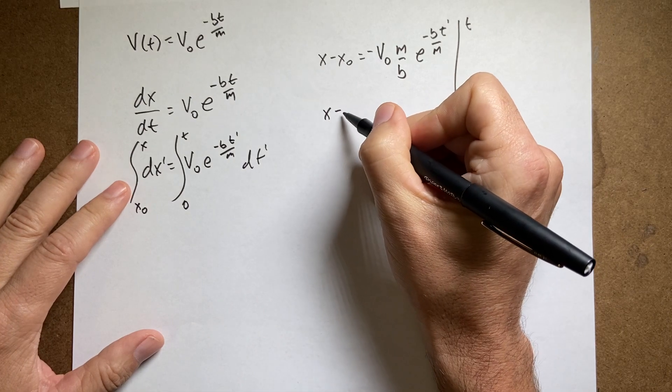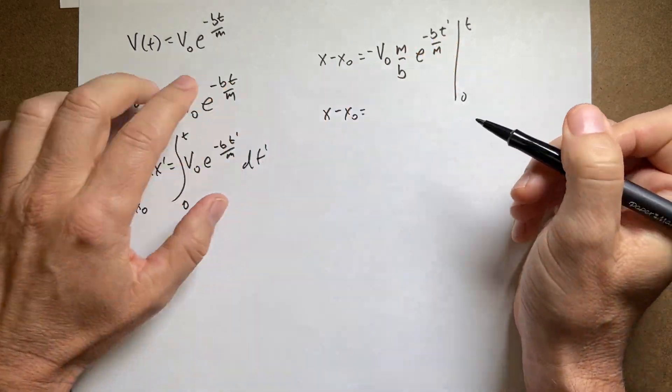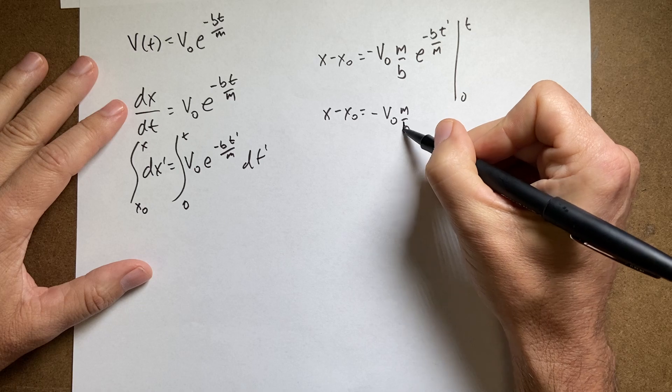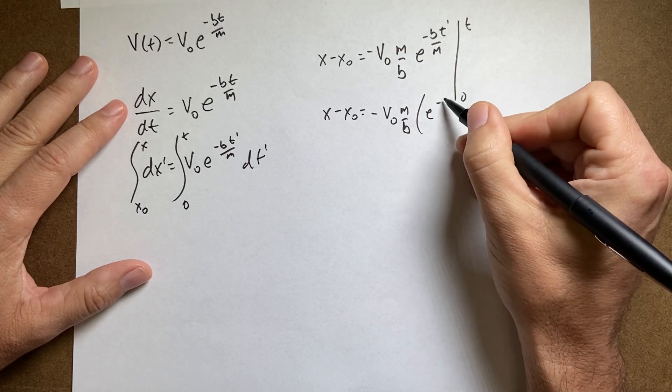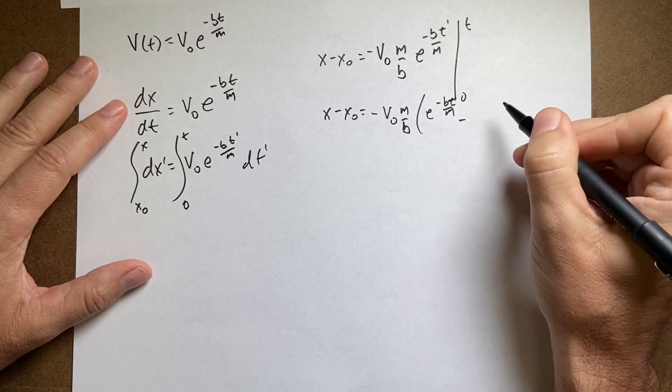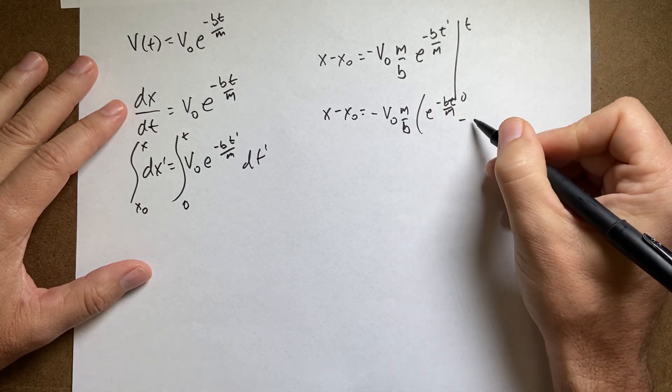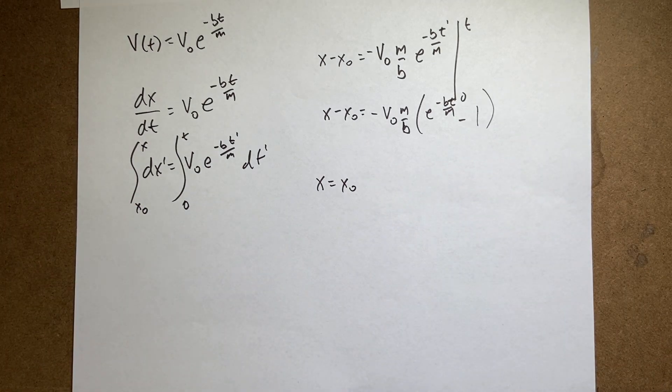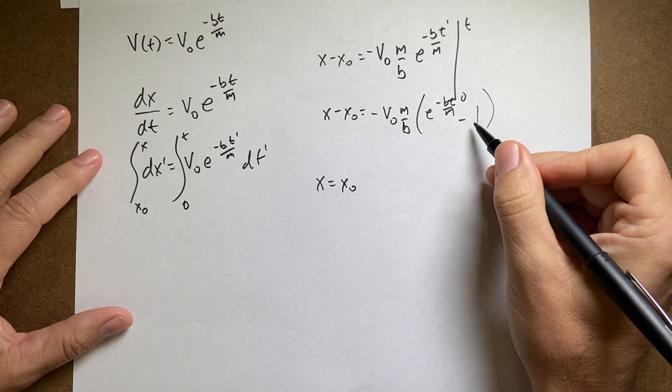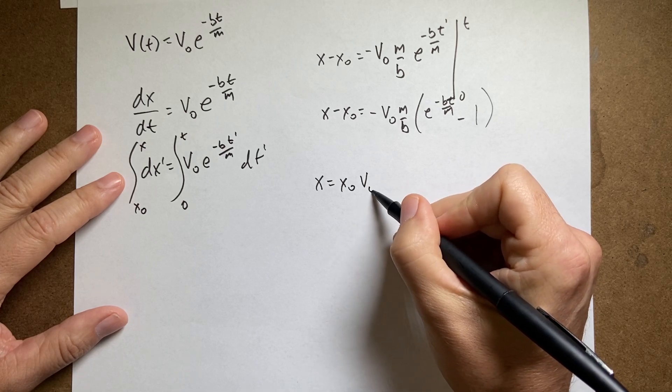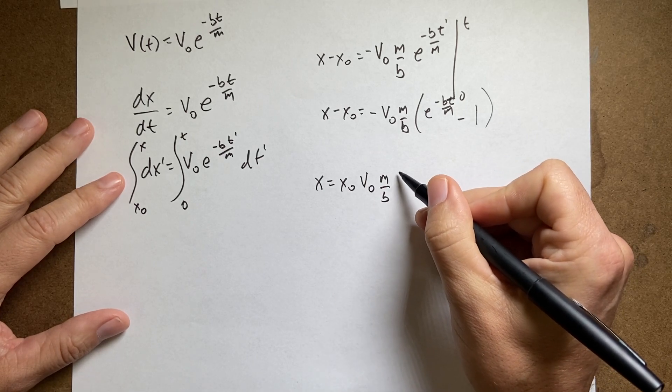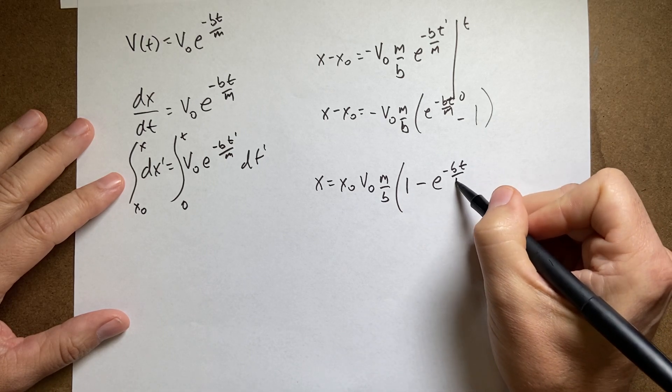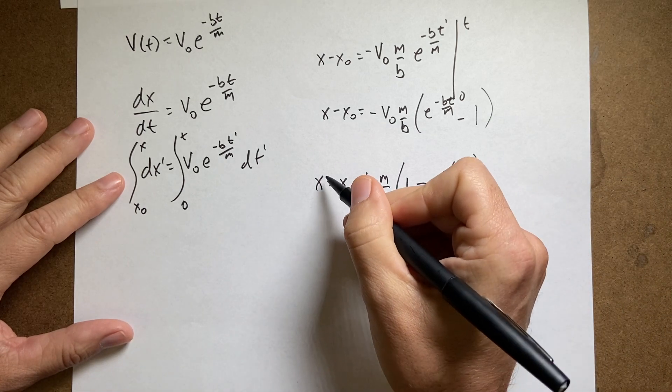So I get X minus X0. Now I'm going to put in T, so I get negative V0 M over B. They're going to both have that term. And then I get E to the negative BT over M minus this to the 0, which is 1. So let's just write this as X equals X0. And I can bring that in, that minus sign in. So I get V0 M over B times 1 minus E to the negative BT over M. And that's my X as a function of T.